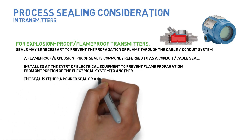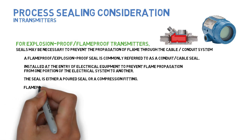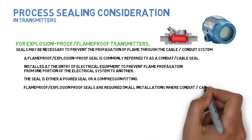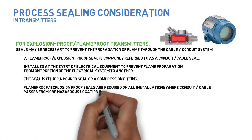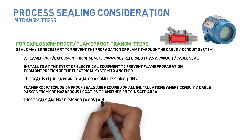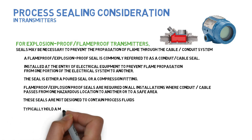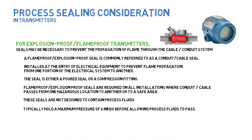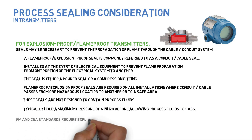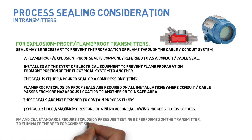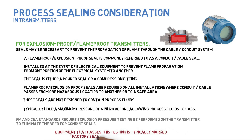The seal is either a port seal or a compression fitting. Flame proof or explosion proof seals are required on all installations where conduit or cable passes from one hazardous location to another or to a safe area. These seals are not designed to contain process fluids — they typically hold a maximum pressure of six inches of H2O before allowing process fluids to pass. FM and CSA standards require explosion pressure testing be performed on the transmitter to eliminate the need for conduit seals. Equipment that passes this testing is typically marked 'factory sealed' or 'seal not required'.